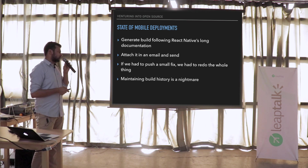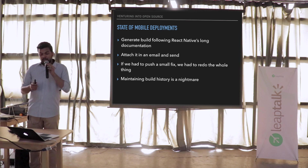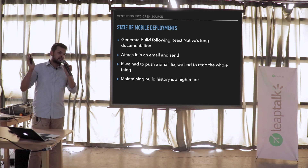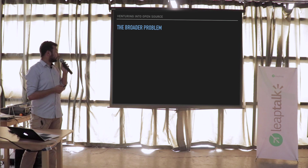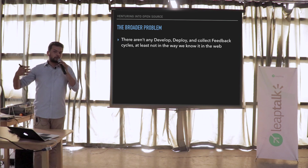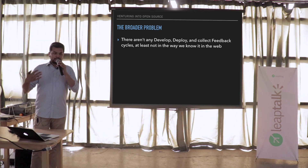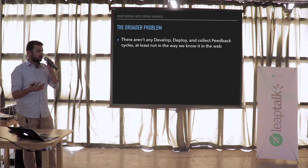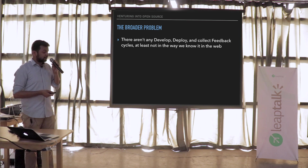Maintaining build history is, of course, a nightmare — you're sending so many emails you can't keep track. The broader problem is that there aren't any developed deploy-and-feedback cycles that we're used to in the web. There isn't a central server where you push your mobile deployments and get instant feedback from your QEs or project managers. If you need to deploy a fix, it's the same process again — there's no one-click deployment in the mobile world.